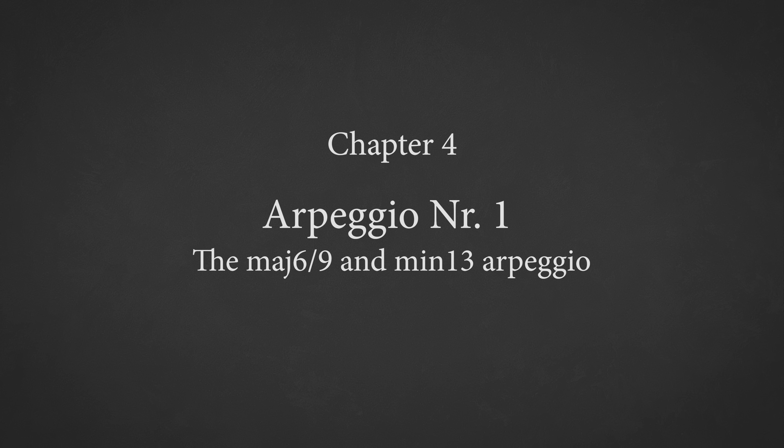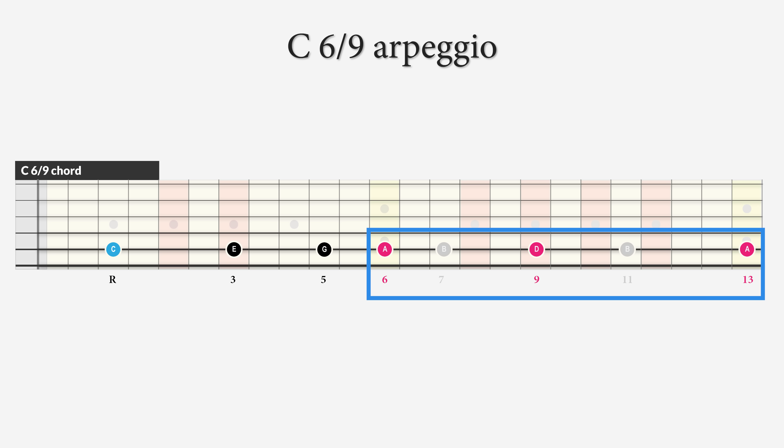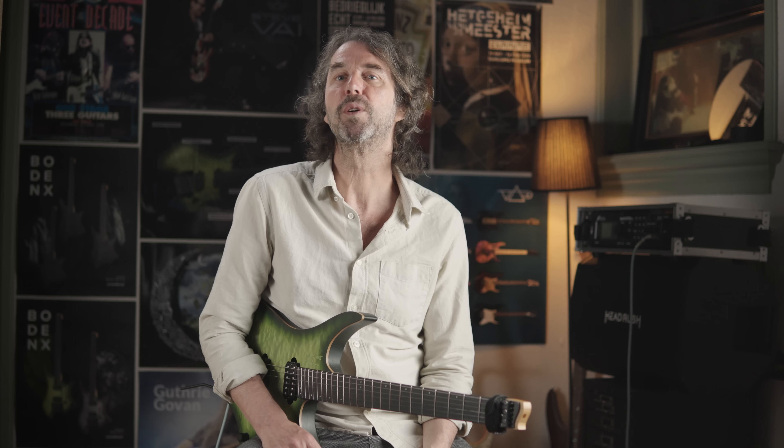Let's start right away with the first example. The first wide interval arpeggio we are going to explore is the major 6-9 arpeggio. This arpeggio consists of the major triad — the root C, the major 3rd E, and the perfect 5th G — extended with the 9th D and the major 13th A. The 11th is omitted because it's an avoid note in the major key. A traditional pattern would be built from thirds where possible, like this.